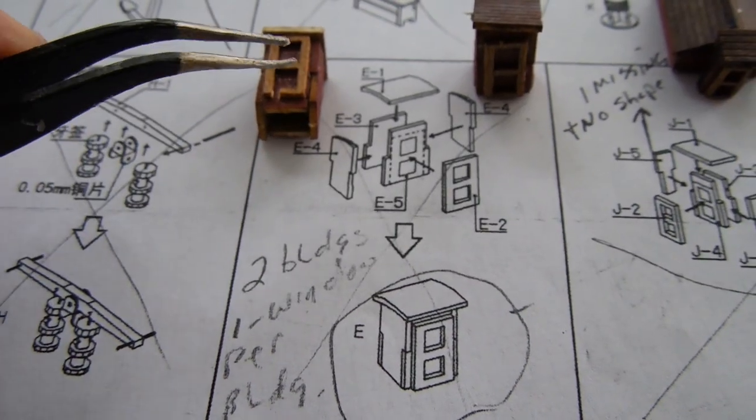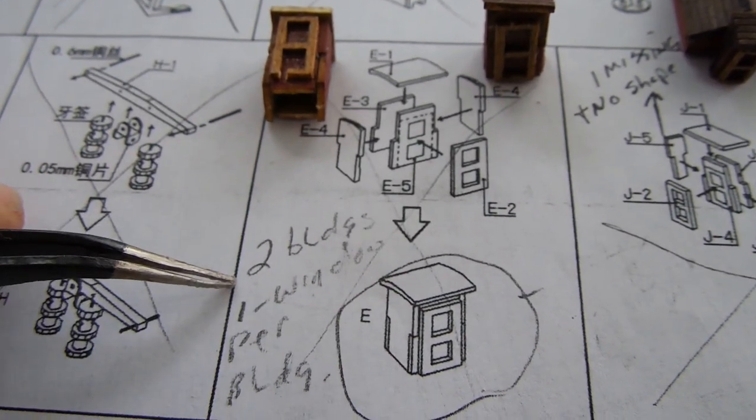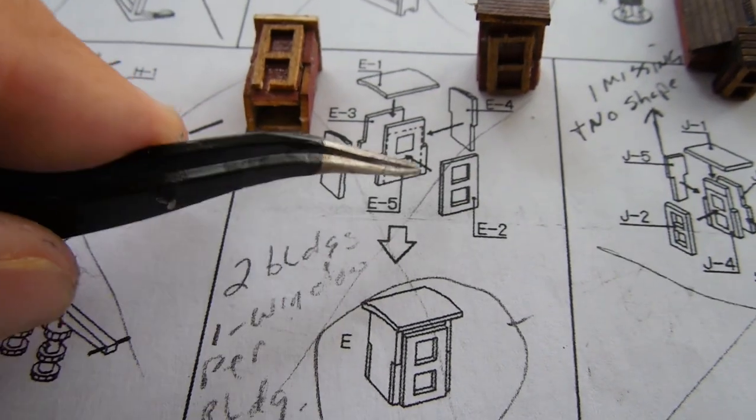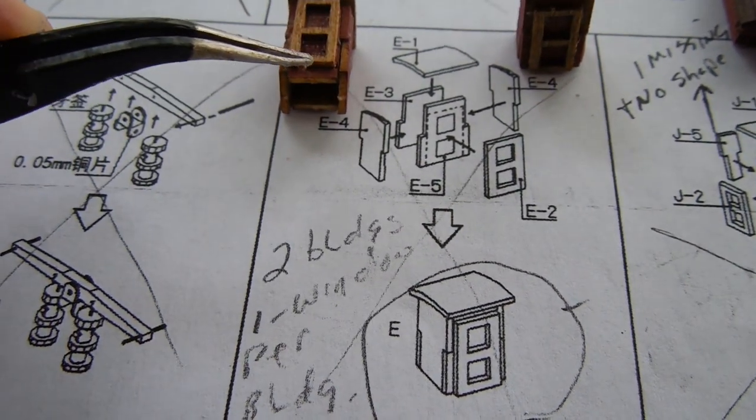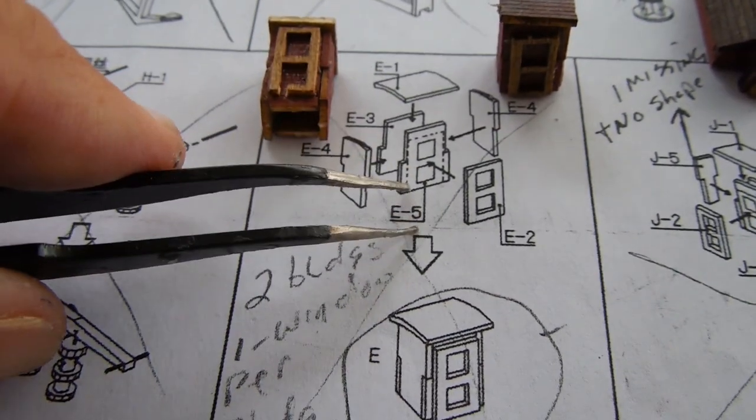In section E, these are two small buildings. It doesn't indicate there are two, but there are two. This little window, E2, is very tricky to get out without breaking. You can see I broke it right here on this one. The second one is fine.